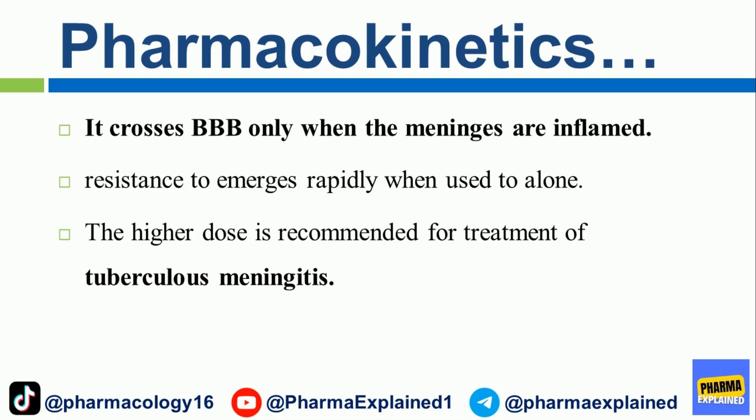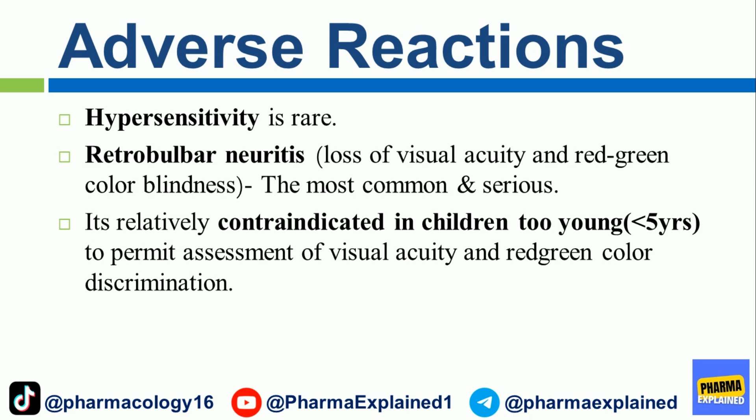The higher dose is recommended for treatment of tuberculous meningitis. Adverse reactions: Hypersensitivity is rare. Retrobulbar neuritis, loss of visual acuity, and red-green color blindness are the most common and serious adverse effects. Ethambutol is relatively contraindicated in children too young (less than 5 years) to permit assessment of visual acuity and red-green color discrimination.